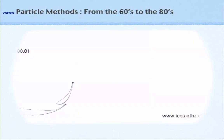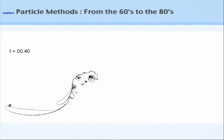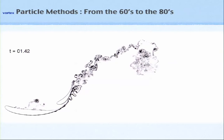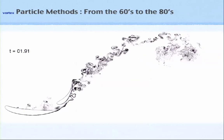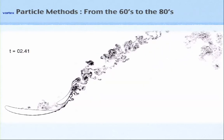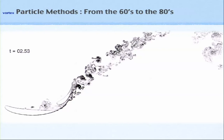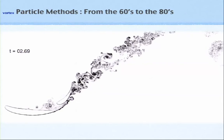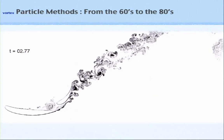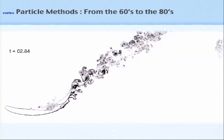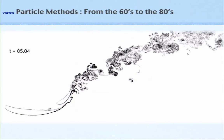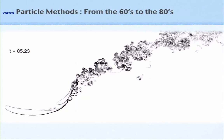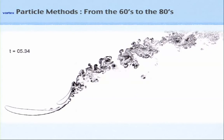In the fluid dynamics community, these methods are not so popular today, and the question is why. Here is a simulation that was very popular in the 70s and 80s — this is the double-winner for a Formula One car. The method is unbeatable: you have complex geometries, no mesh, and only computational elements where vorticity is.